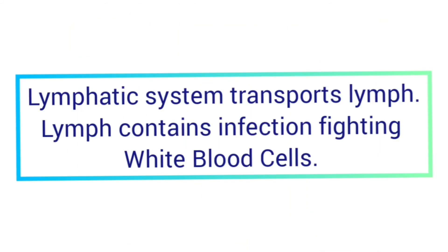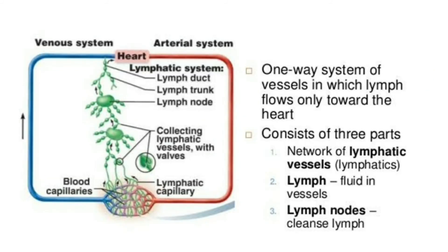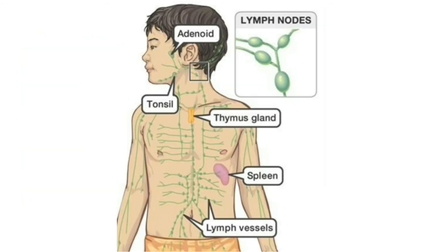The primary function of the lymphatic system is to transport lymph, which is a fluid containing infection-fighting white blood cells, throughout the body. The lymphatic system consists of lymphatic vessels, which are similar to veins and capillaries of the circulatory system. These vessels are connected to lymph nodes, where lymph is filtered. The tonsils, adenoids, spleen, and thymus are all parts of the lymphatic system.